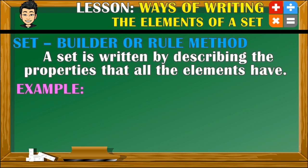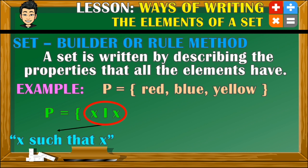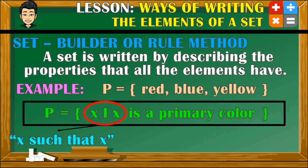Take a look at this example. Set P has the following elements — it is written in roster or listing method. We can say that they are all examples of primary colors. So to write this set in set builder or rule method, we still need to write the name of the set, followed by an equal sign and an open bracket. Then we write: x such that x, followed by the property or common characteristic of all the elements. In this case, each one is a primary color. Then we enclose it with a bracket. So this is how you write a set in set builder or rule method.